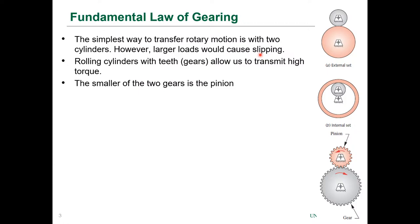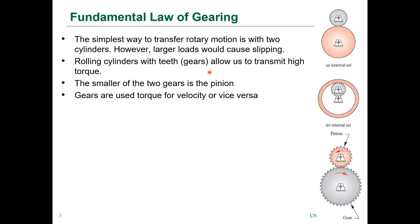What we do is have rolling cylinders with teeth on them — we call them gears — and that allows us to transmit higher torque. The smaller of two gears is the pinion. With external gears, the direction of rotation changes; with internal gears, the direction remains the same. Gears are used to change velocity, increase torque, or vice versa — we exchange torque for velocity or velocity for torque.